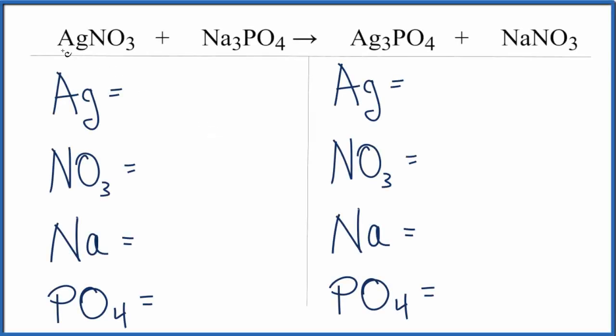To begin balancing this equation, we have AgNO3 plus Na3PO4. Let's count the atoms up on each side of the equation.